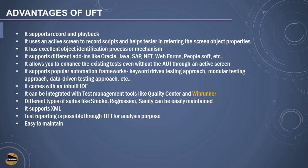It comes with an inbuilt IDE which makes interaction more convenient. It can be integrated with test management tools like ALM, which was earlier called Quality Center. There was also a tool called WinRunner, a product of Mercury, but it is no longer existing as it was retired at version 8.0. Different types of test suites like smoke, regression, and sanity can be easily maintained. It also supports XML reporting and XML data import and export. Test reporting is possible through UFT for analysis purposes — you can generate great reports within the tool itself without any external add-ins. It is easy to maintain scripts as they are well structured throughout the entire test.